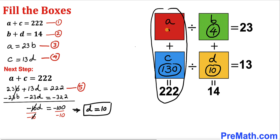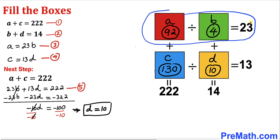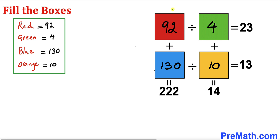Finally, focusing on the two vertical boxes, our A value has got to be 92, so that adding those two boxes gives us 222. And checking the horizontal boxes, 92 divided by 4 indeed gives us 23. So the answers are: red box is 92, green box is 4, blue box is 130, and orange box is 10. Thanks for watching and please don't forget to subscribe to my channel for more exciting videos. Bye!